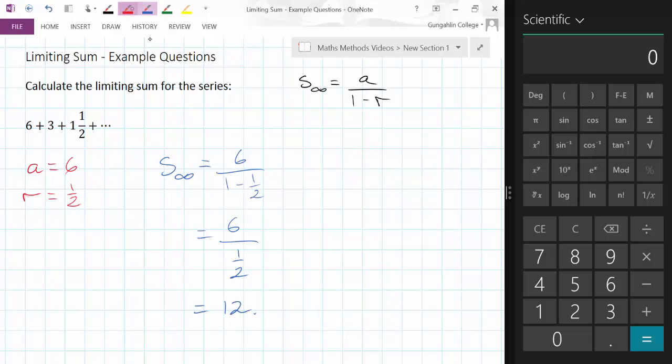Let's just review what that means. It doesn't matter how many terms of this series I add, I'm never going to surpass or equal the number 12. This is the limit, the limiting sum, the maximum. I say maximum, but it can't ever have that value.